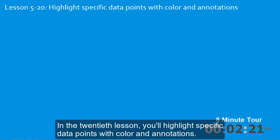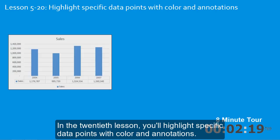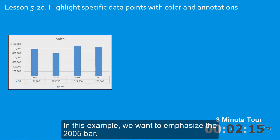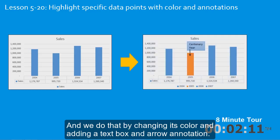In the twentieth lesson you'll highlight specific data points with color and annotations. In this example we want to emphasize the 2005 bar, and we do that by changing its color and adding a text box and arrow annotation.